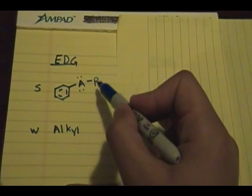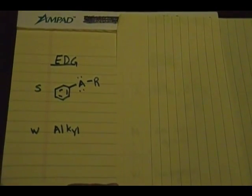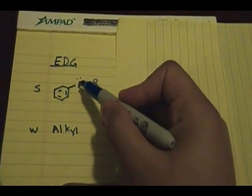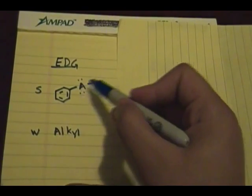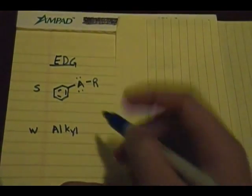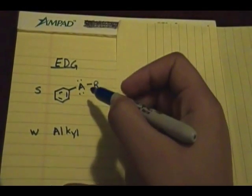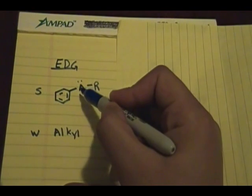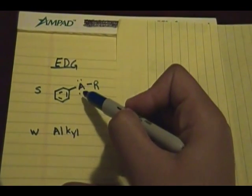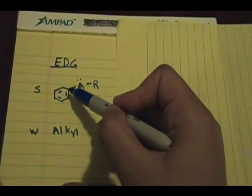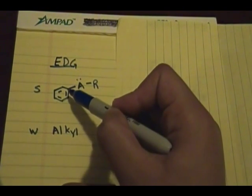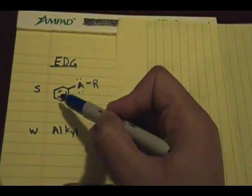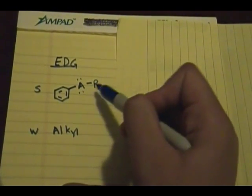'R' stands for an alkyl group. For example, if 'A' is oxygen — oxygen usually has two lone pairs and is directly attached to the carbon of the aromatic ring — it can donate that pair of electrons into the aromatic ring via resonance. That's the strongest type of electron donating group.